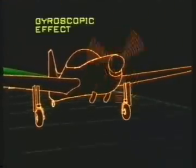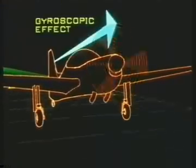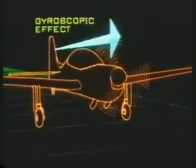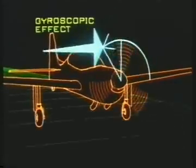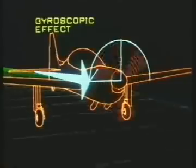The second cause of swing on take-off exclusive to aircraft with a tail wheel is the gyroscopic effect. The force applied to the propeller as the tail wheel lifts off acts as though it is applied 90 degrees in the direction of rotation and produces a swing to port.